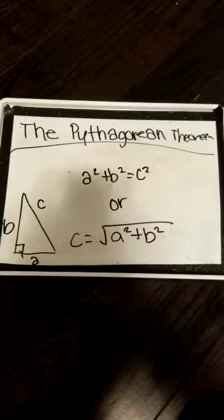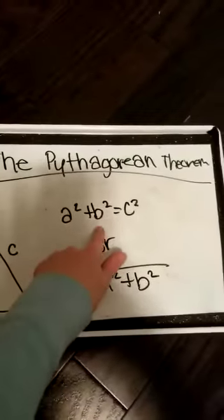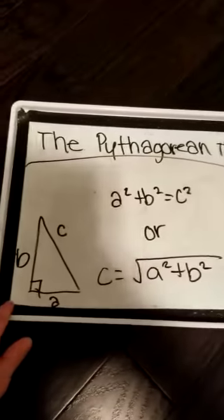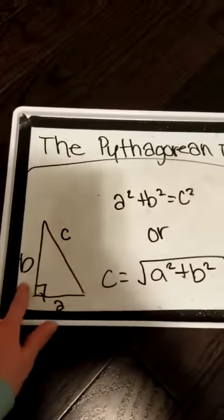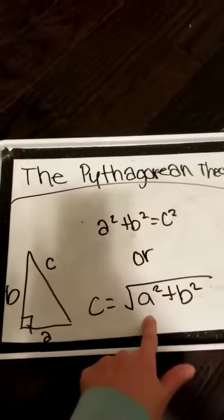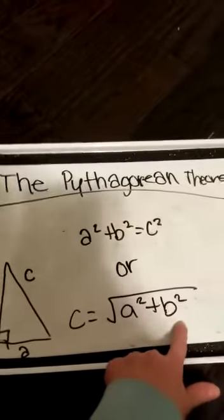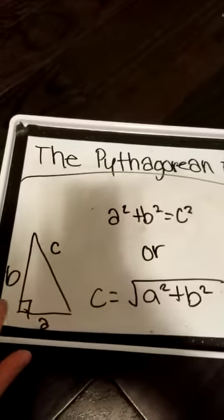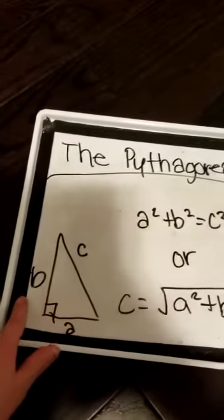Now to his theorem. The Pythagorean theorem is a squared plus b squared equals c squared in a right-angled triangle. Or you can also use c equals square root of a squared plus b squared.